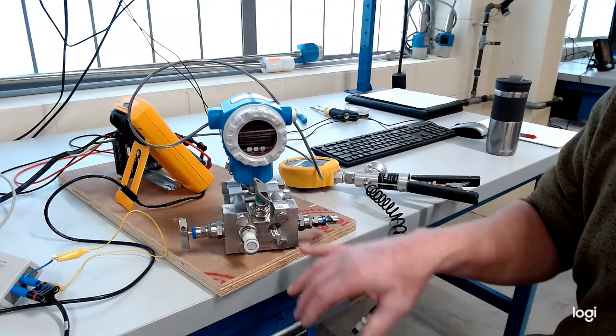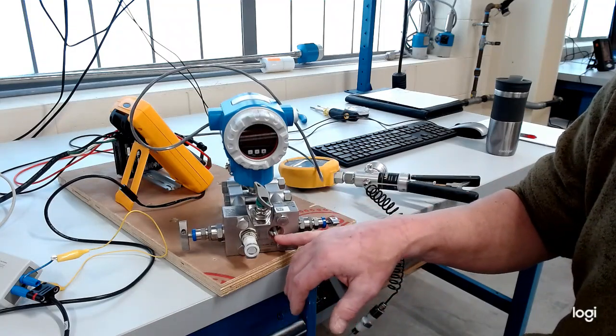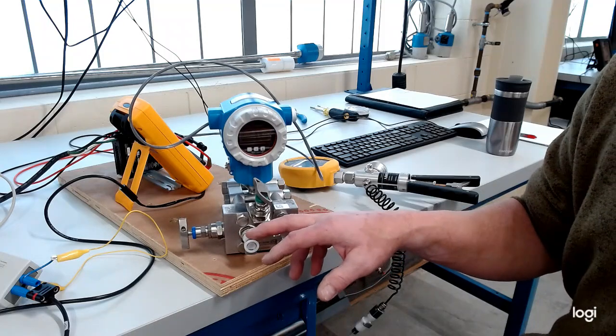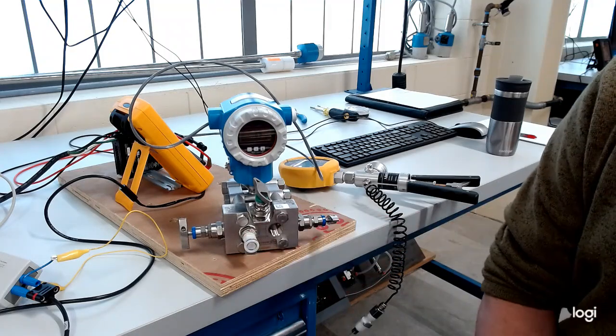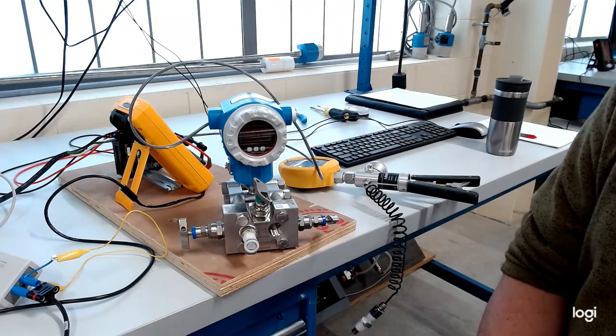I've seen stuff crawling in there and it can cause problems as well. So we vent that to atmosphere, then the high side gets connected to the bottom of the vessel and measures the head pressure. And we've talked about head pressure level before you guys took off on break.